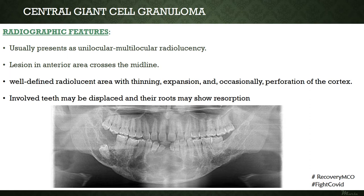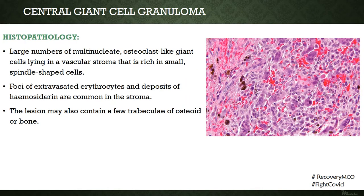The involved teeth are generally displaced and roots may show resorption. A multilocular lesion with thin septae giving a multilocular appearance can be seen in the anterior mandible. Biopsy reveals a large number of multinucleated osteoclast-like giant cells in a vascular stroma rich in small spindle-shaped cells. Foci of extravasated RBCs and deposits of hemosiderin are also seen within the stroma. Occasionally, few trabeculae of osteoid or bone formation may also be present.